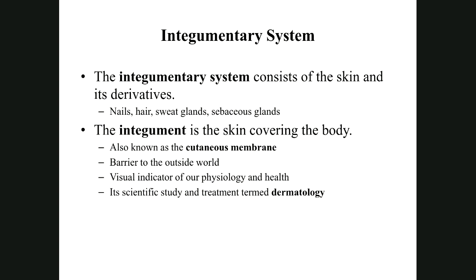The integumentary system consists of two main components. Here it says skin and its derivatives, but I like to say skin and its accessory structures. The skin is also called the cutaneous membrane, and the skin is really the epidermis plus the dermis. Those accessory structures — the derivatives of the integumentary system — are nails, hair, and glands.